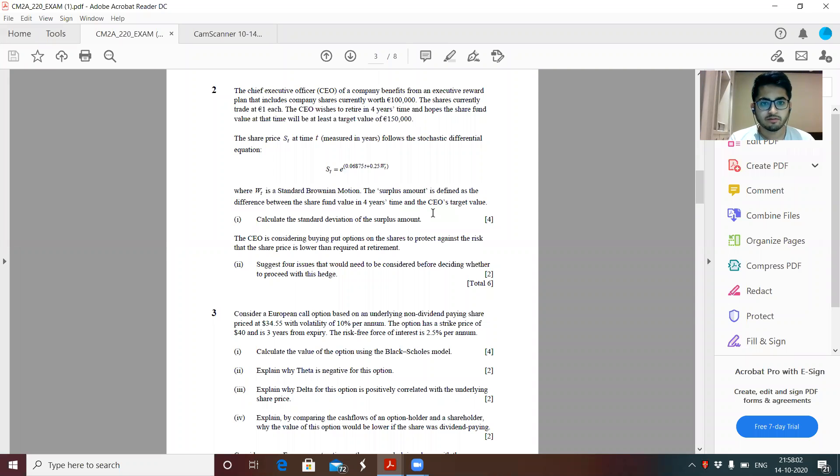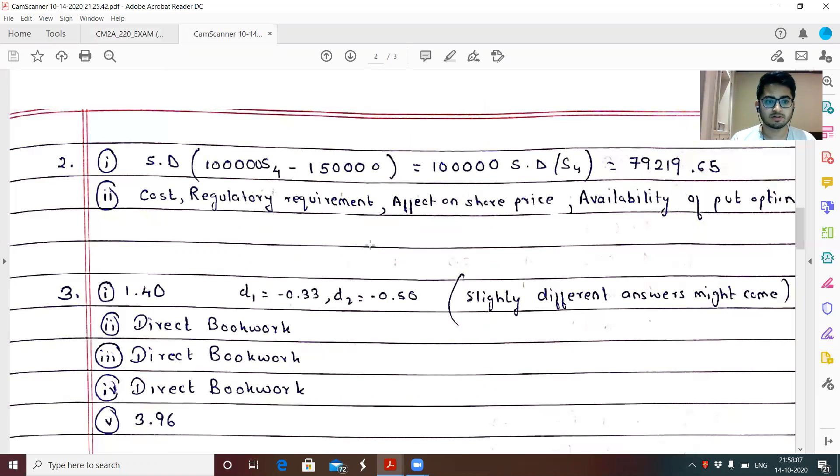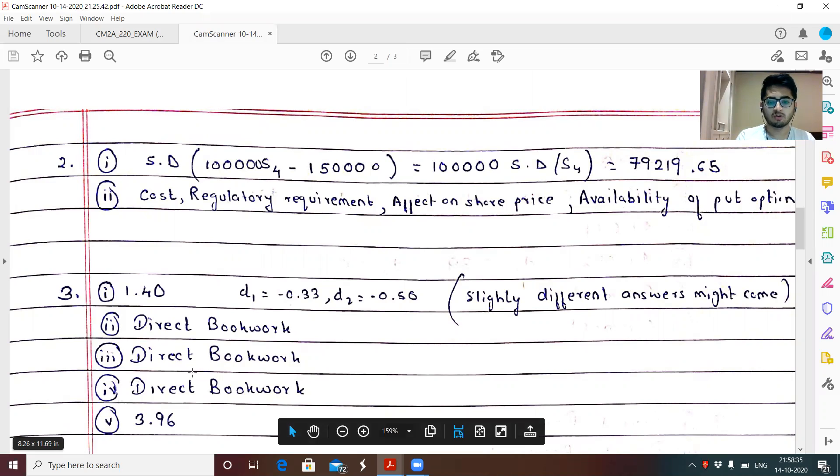So moving forward, the third question. These are the answers for the third question. One point four or different students may get slightly different answers depending on how they have rounded off D one and D two. Since the paper was absolutely long. So I would, in retrospect, I could have suggested you all to just round up to two decimal places and get the answer instead of interpolating and getting the value for it. So part two, three, four are direct book work, how the different factors affect the option prices. And part five, I was getting 3.96 by applying the put call parity.